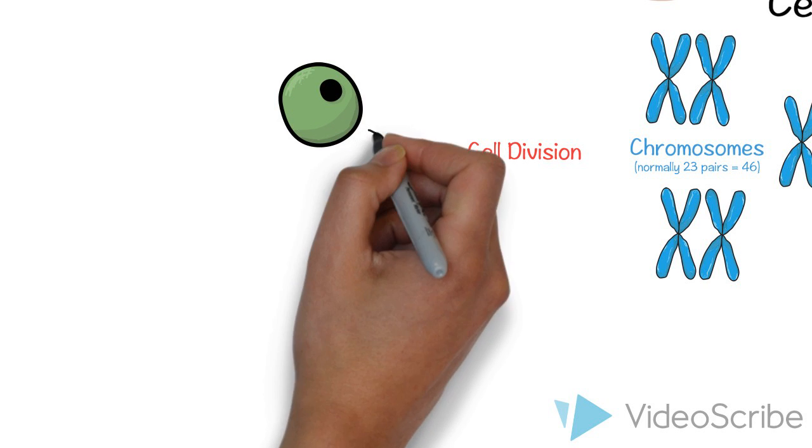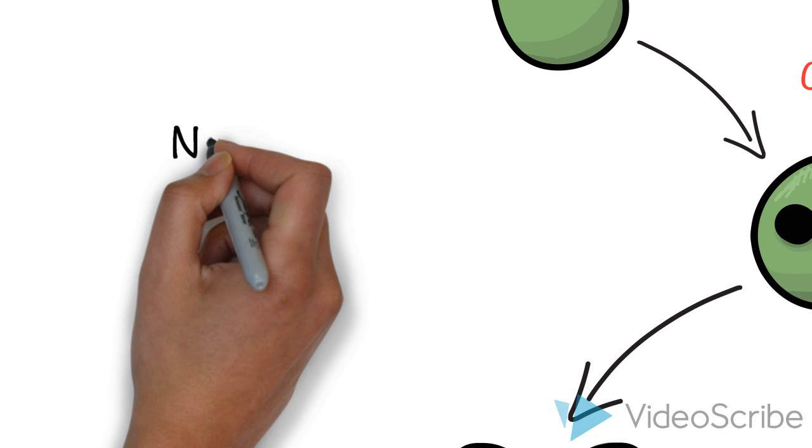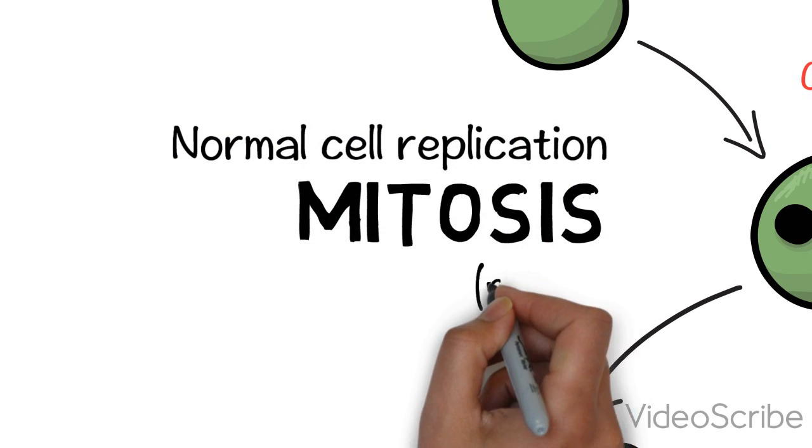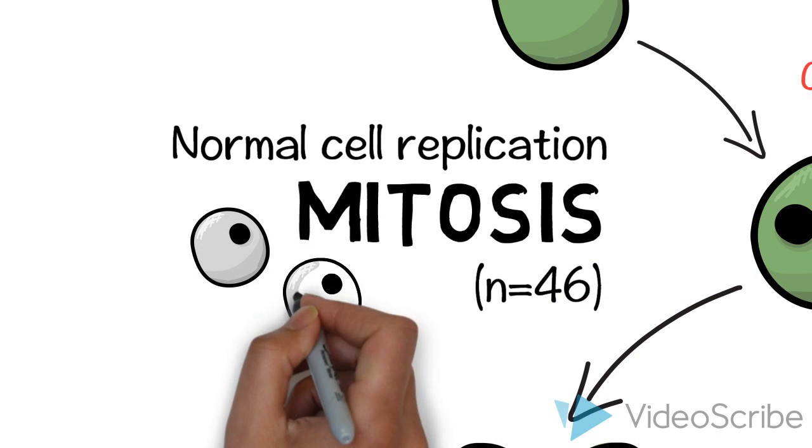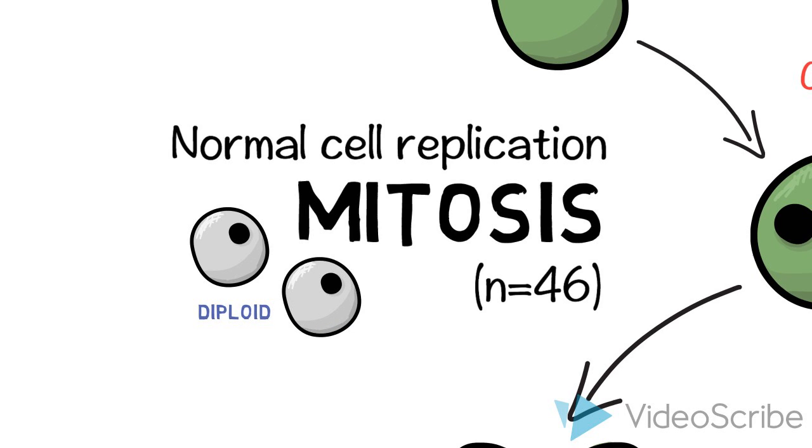The DNA is replicated and then the cell splits into two identical copies of one another. Normal cell replication occurs via the process of mitosis, which generates two identical cells, each with 46 chromosomes in their nuclei. These cells are known as diploid cells because they have a full complement of chromosomes in pairs.